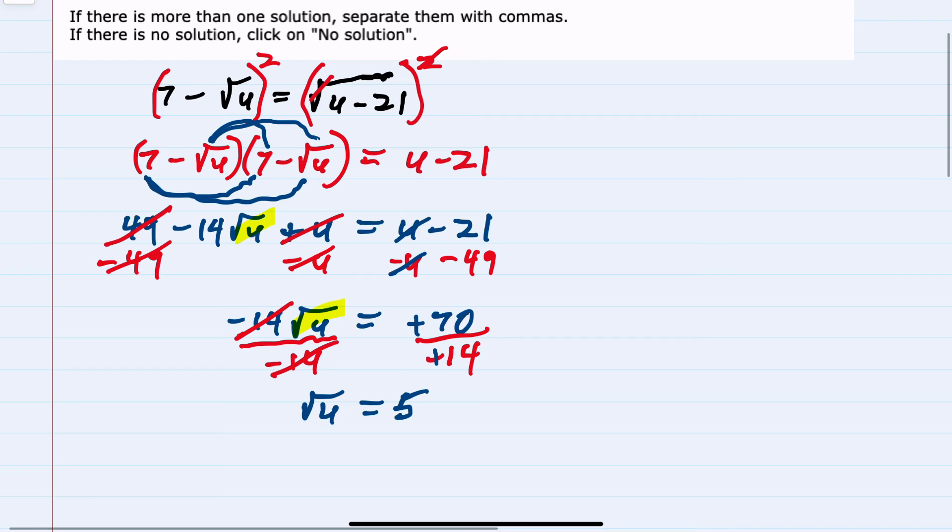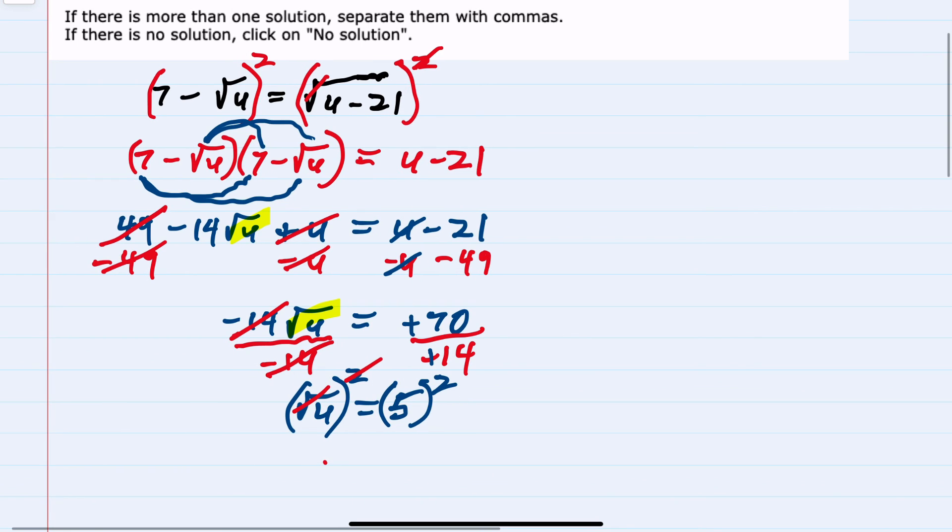And from here, squaring once more on both sides to remove the radical on the left-hand side, I have u equals 5 squared, or 25.